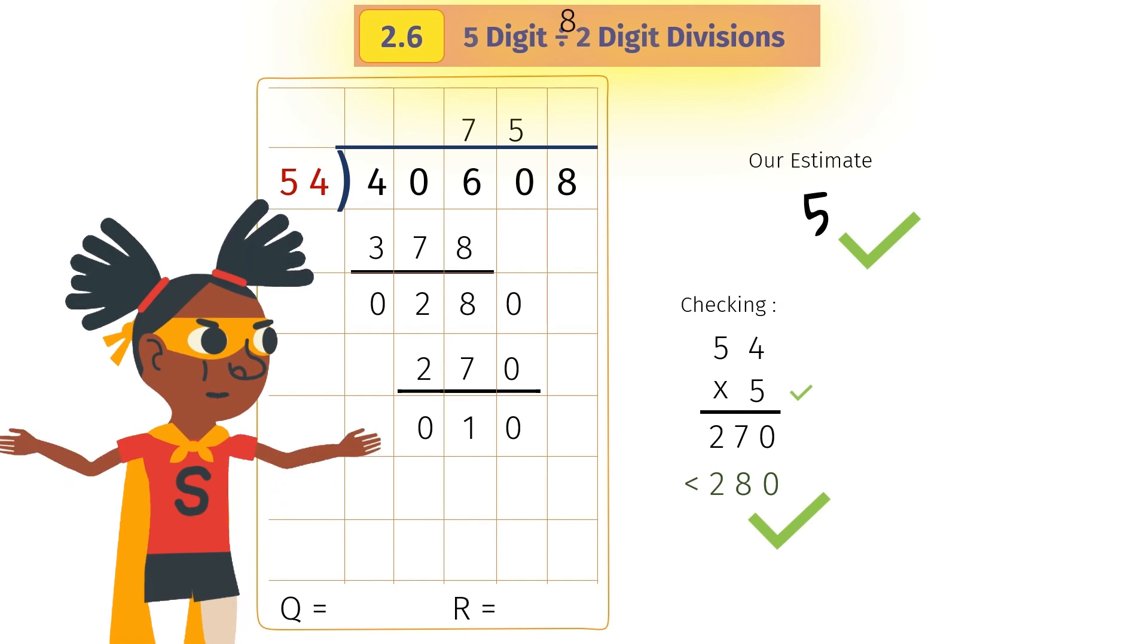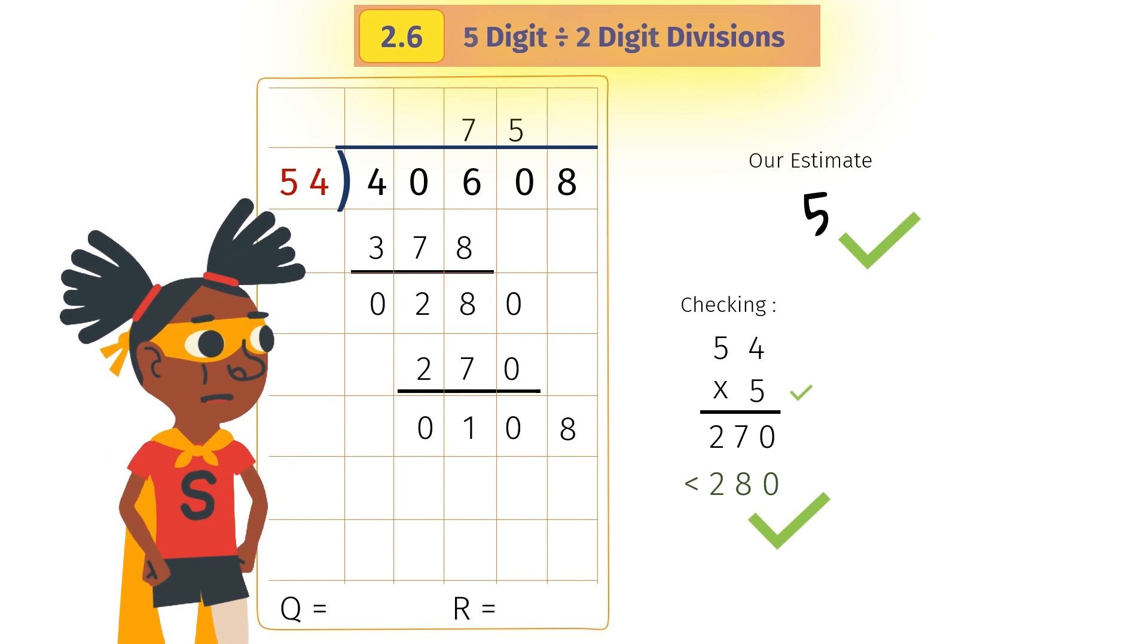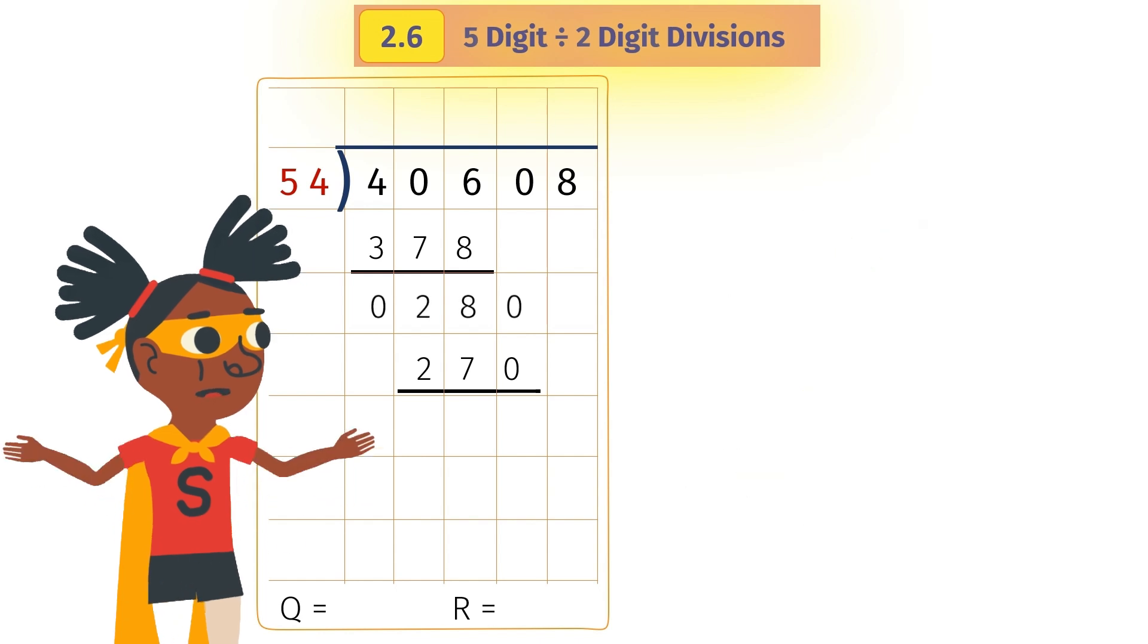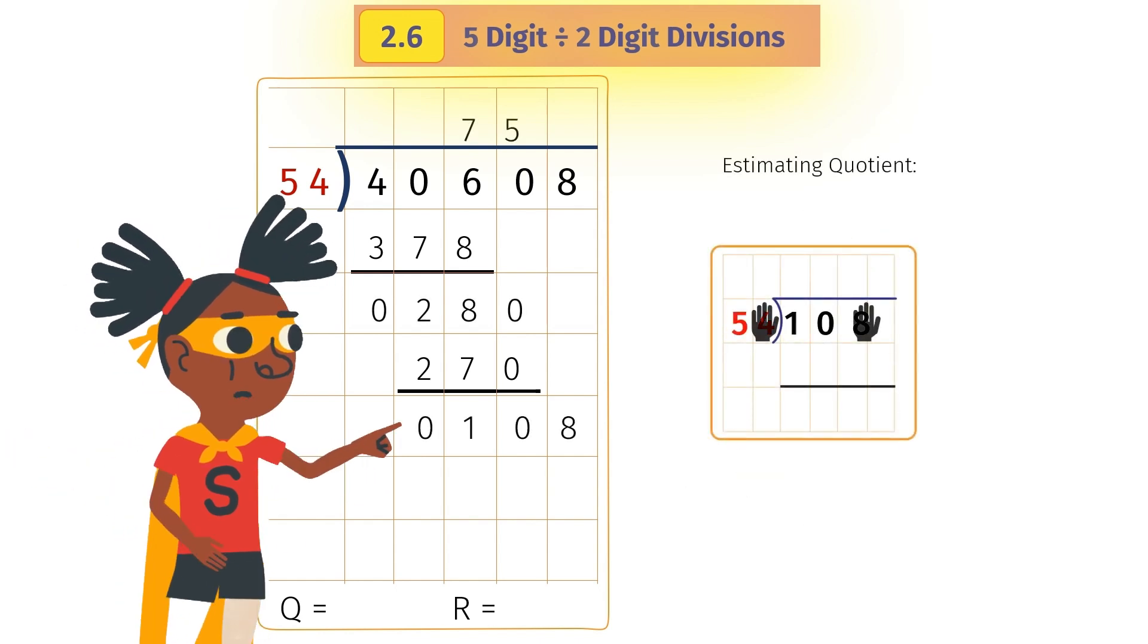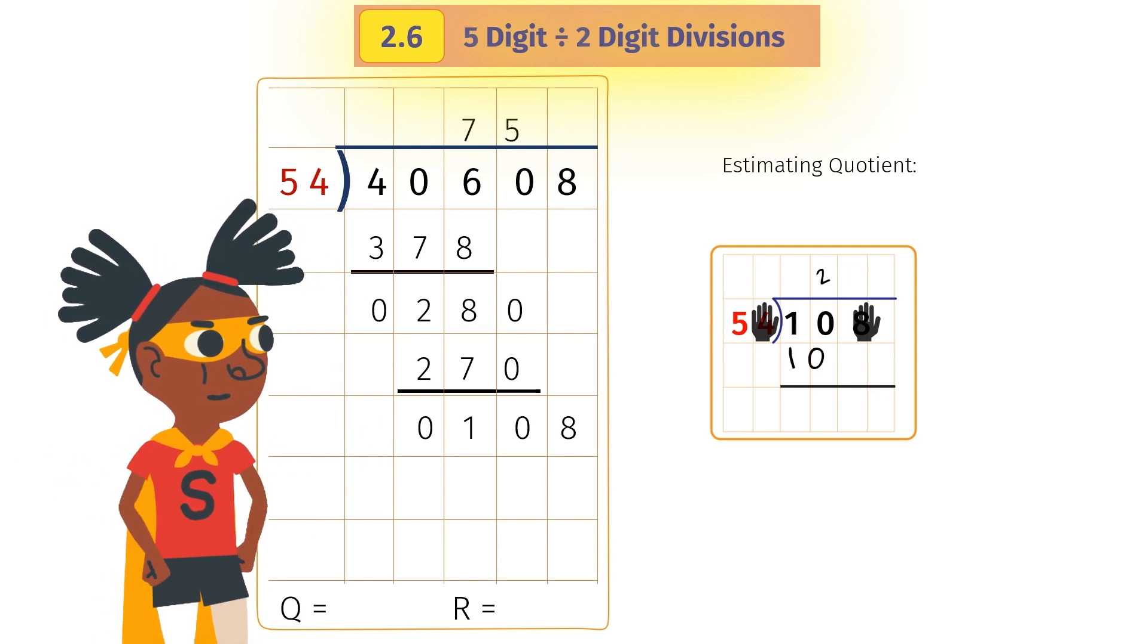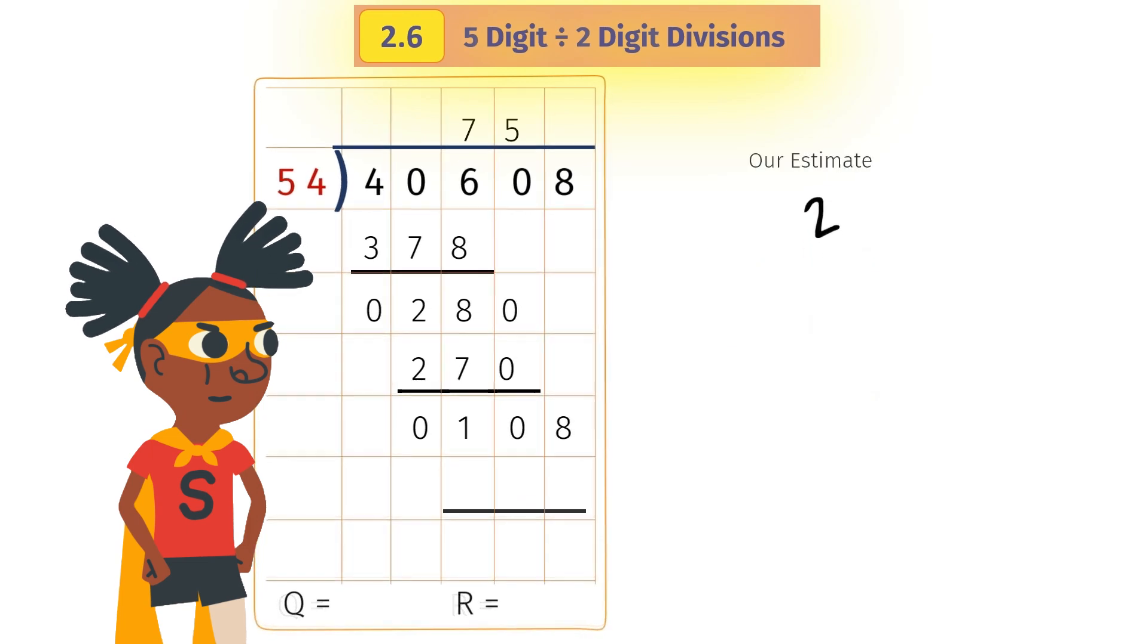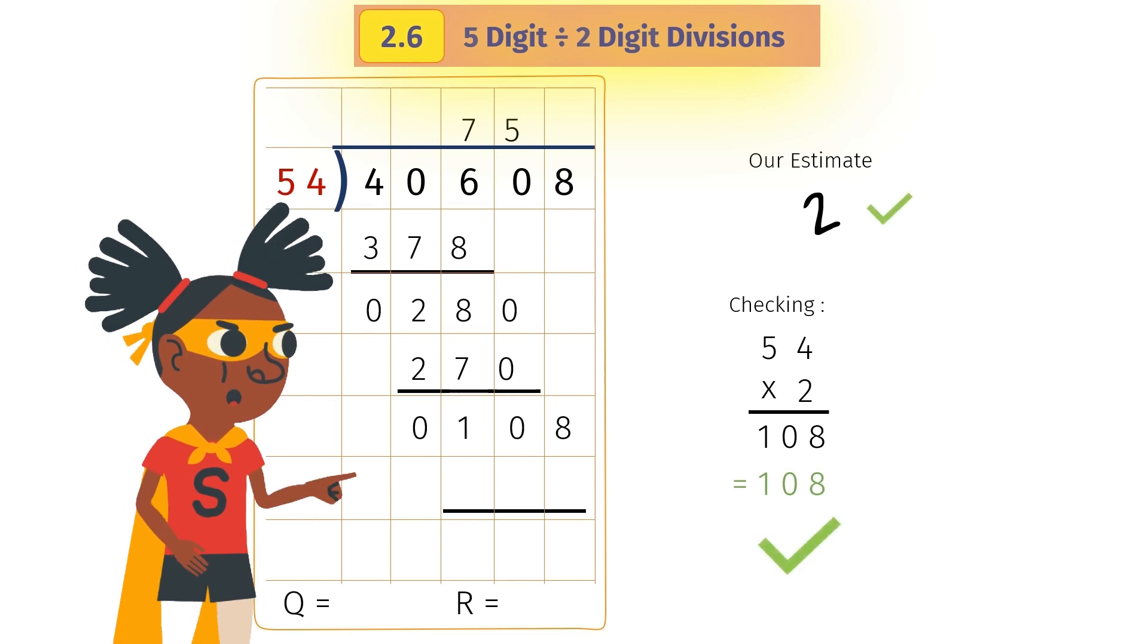Filling in the numbers, we get the next number 108. To divide 108 by 54, we again go through the estimation process. Hide the last digit of 108 and 54, and we get an estimate of 2. Multiplying by 2, we get the exact number 108. So we go with 2.